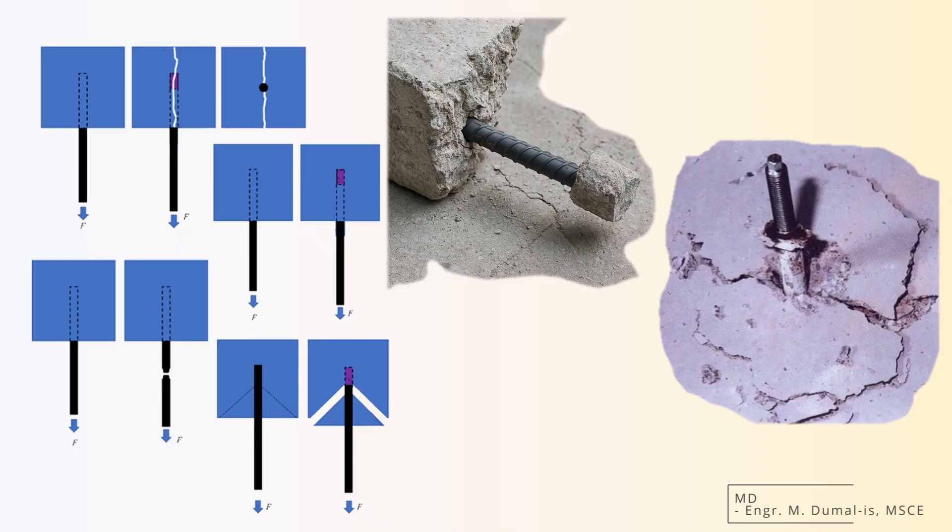You've got a brittle failure, and there's no warning. This is especially critical in seismic zones or heavily loaded structures, where demand on anchorage is very high.